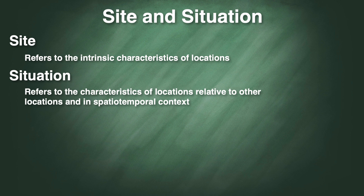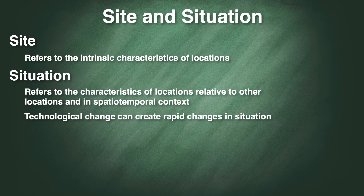One major factor that changes situation is technology. As new technologies are developed, the situation can change dramatically. For instance, many of the territories of the states of the Middle East have always been located over potentially vast oil reserves. That has to do with their site — that's just a fact of the physical geography. However, that didn't automatically always translate into wealth, because there wasn't always a use for that oil.